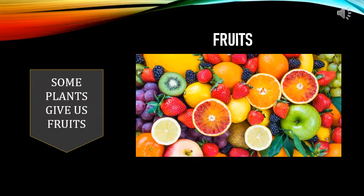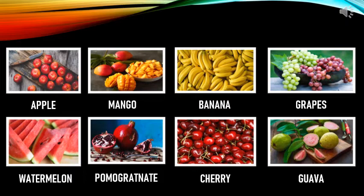Some plants give us fruits. Here are some examples of fruits: apple, mango, banana, grapes, watermelon, pomegranate, cherry, and guava.